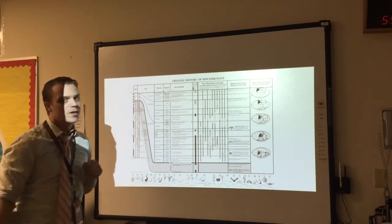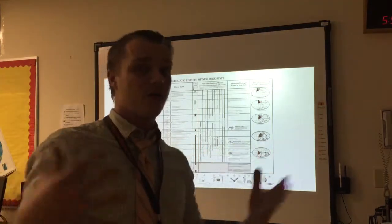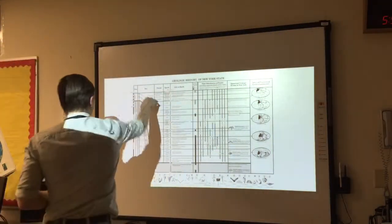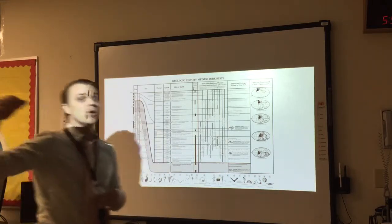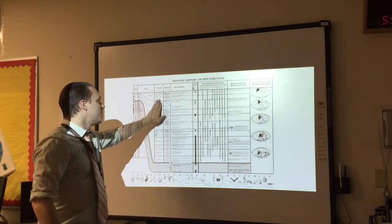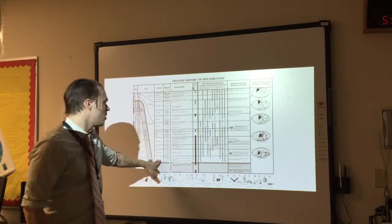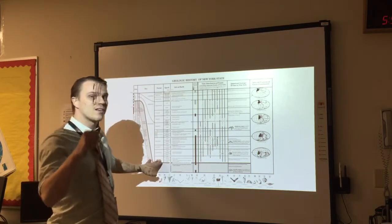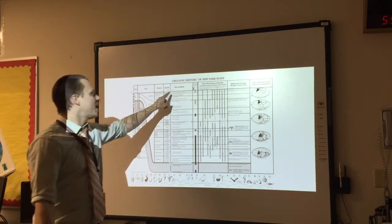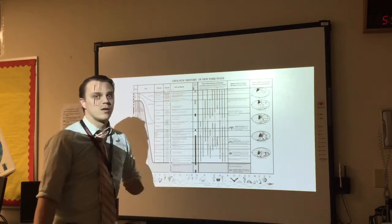If they ask you about what era did something happen, your answer is going to be one of these three things: the Cenozoic, the Mesozoic, and the Paleozoic. Now if they ask you about what period, you've got a lot more options for that, but that doesn't mean it's any more complicated. All you have to do is find the thing that they're asking you about. In most cases, they ask you about life on Earth.